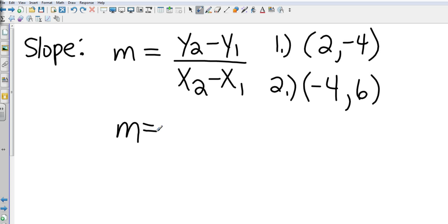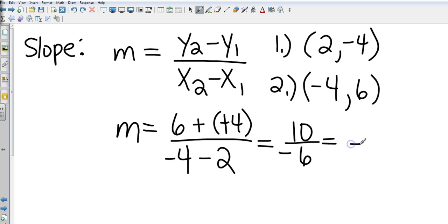My Y value of my second point is 6. Then I'm going to subtract the Y value of my first point, which is negative 4. All over my X coordinate is negative 4 of my second point. Then I'm going to subtract my X coordinate of the first point. 6 minus a negative 4 makes that 6 plus 4, which is 10. And negative 4 minus 2 is negative 6.